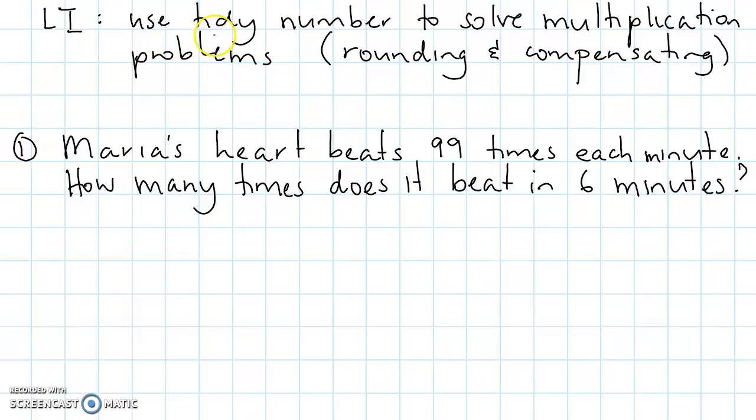Because we have to use tidy numbers, our learning intention is to use tidy numbers. So we have to rewrite that word problem into a number problem. So 6 minutes times 99 beats equals... we don't know.